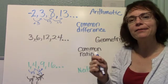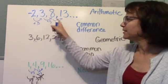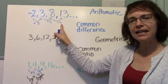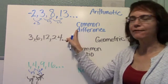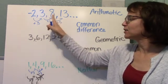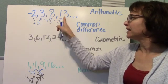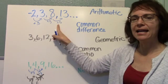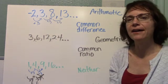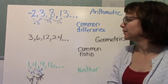This is an arithmetic sequence. I'm adding every time. This 5 is called the common difference. Because if I take 13 minus 8, I get 5. If I take this term, subtract this term, I end up with this common difference of 5. That's called an arithmetic sequence.